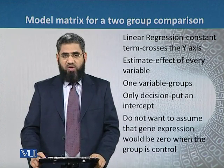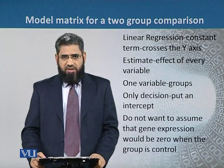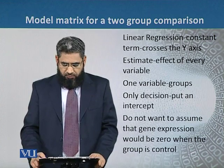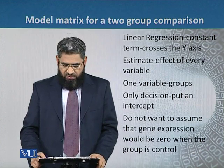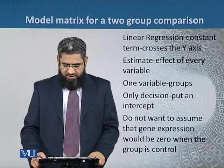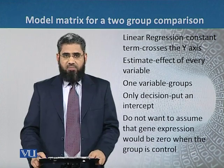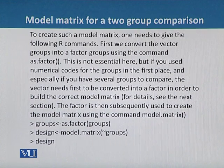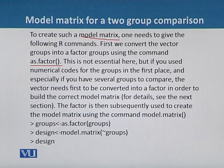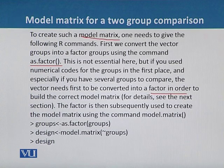We have to decide whether to add an intercept in this linear regression or not. Our decision should be to add the intercept, because we do not want to assume that gene expression would be zero when the group is control. To create such a model matrix, we first convert the vector 'groups' into a factor using the command as.factor. This is not essential here, but if we use numeric codes for groups, especially with several groups to compare, the vector needs to be converted into a factor to build the correct model matrix.